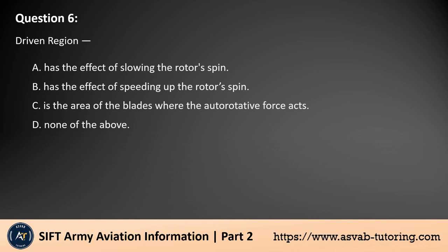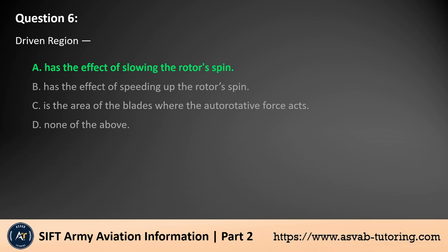Question 6. Driven region: A. Has the effect of slowing the rotor's spin. B. Has the effect of speeding up the rotor's spin. C. Is the area of the blades where the autorotative force acts. D. None of the above. The answer is A. The driven region is the part of the helicopter rotor blade where airflow opposes the rotation, creating drag and slowing the rotor's spin. In autorotation, this region typically lies at the outer portion of the blades and is balanced by the driving region, which provides the force to maintain rotor speed.